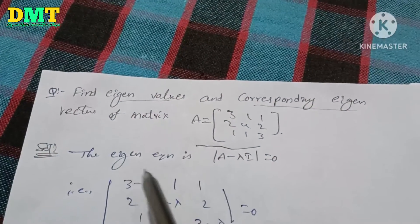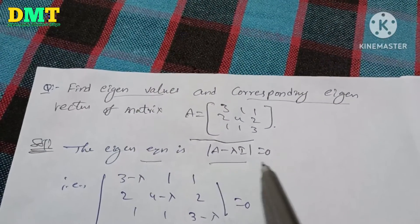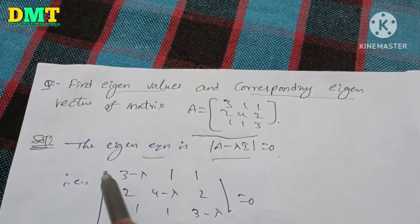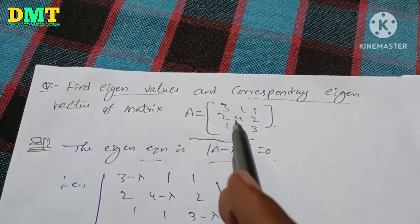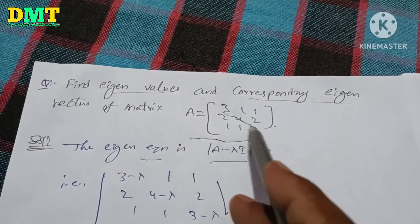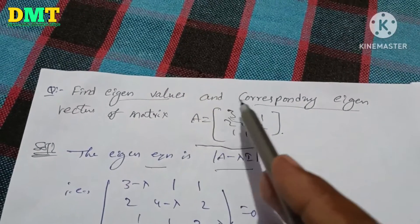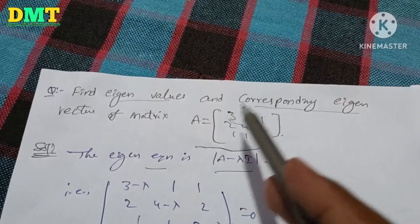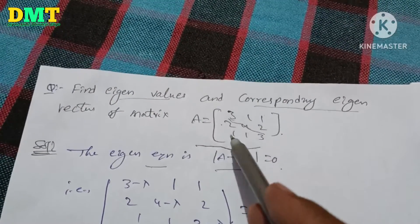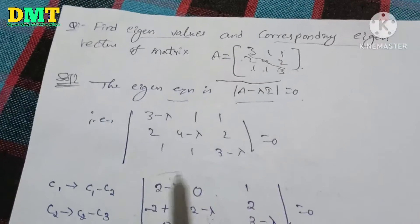First, the eigen equation is det(A minus lambda) equal to 0. The determinant is: 3 minus lambda, the center values minus lambda. It is (3 minus lambda), 1, 1, 2, (4 minus lambda), 2, 1, 1, (3 minus lambda).